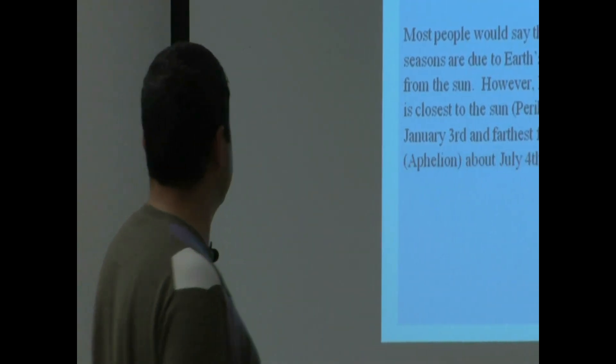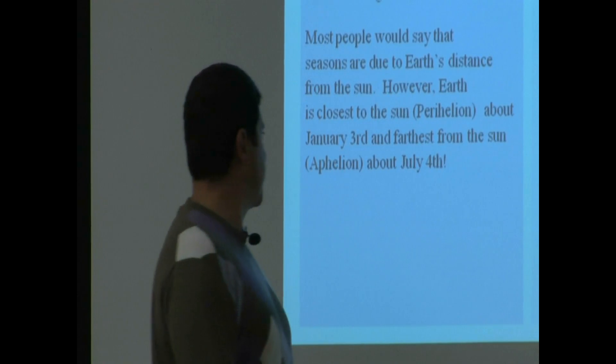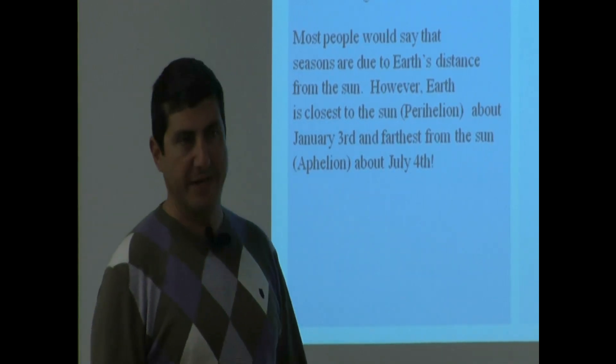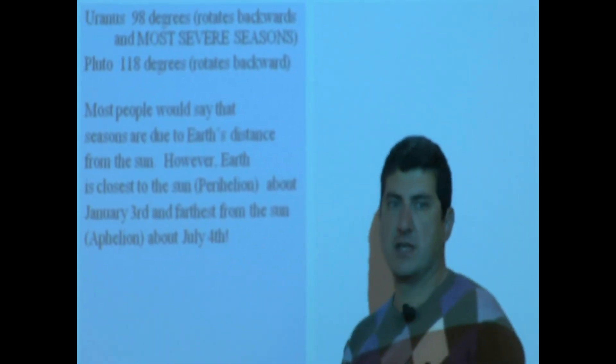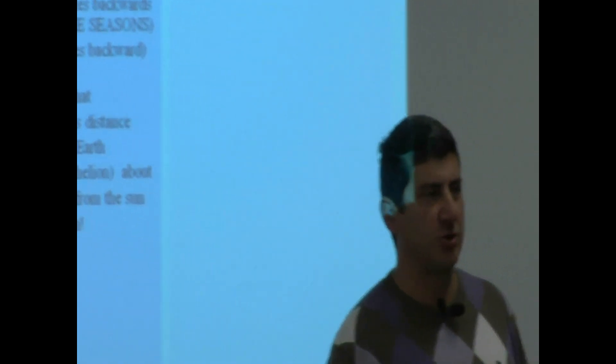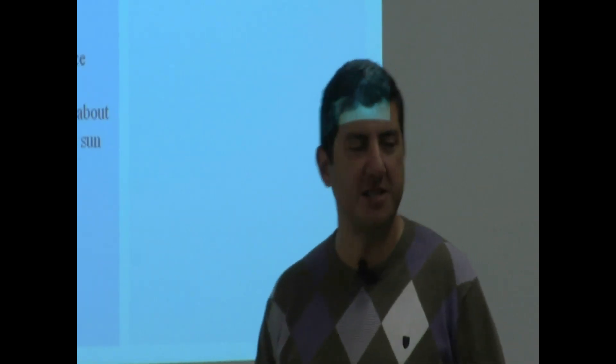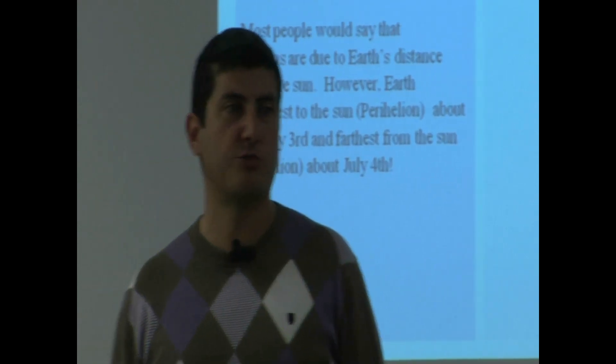The Earth is farthest from the Sun, known as its aphelion. Peri means close, helios means Sun. Ap means far from the Sun. July 4th. The easy way to remember that is on July 4th, we celebrate Independence Day. We are far from Britain on that day. We declared independence. So then our Earth is far from the Sun. We are declaring independence from the Sun.